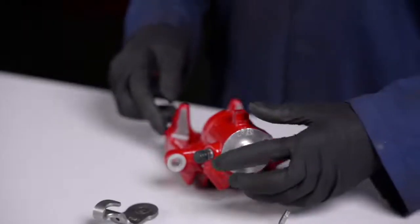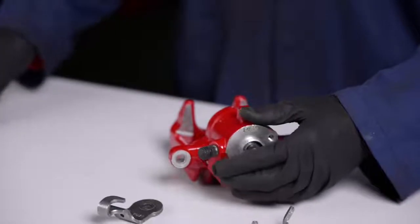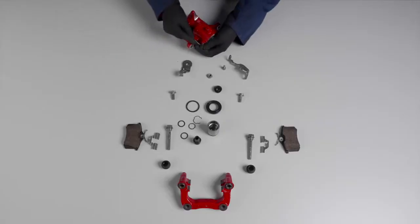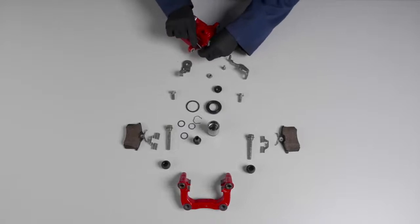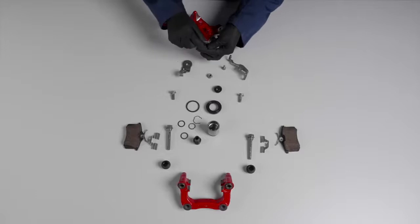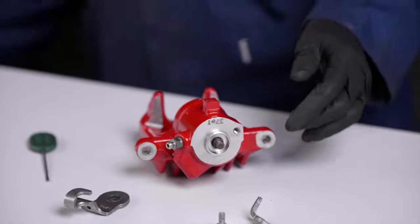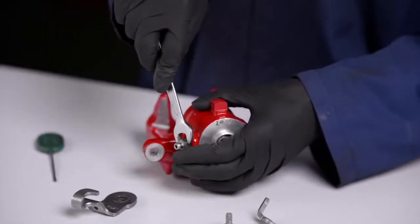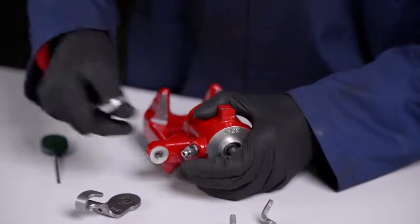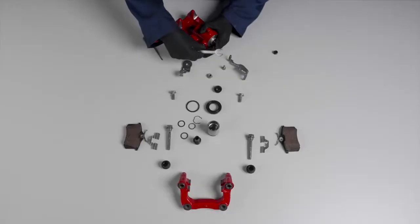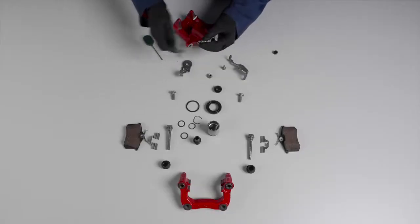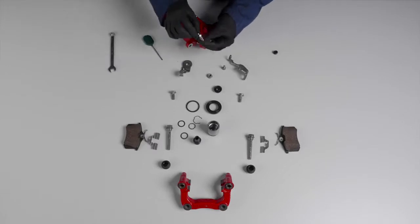This piece right here is called a purging or bleeder along with the cap. When the caliper is installed in the chassis and the hydraulic system is connected, it is necessary to remove any air that may have stayed inside the system. This process is called purging. That is when the purge came into play. Opening it up a little bit and stepping on the brake pedal, we manage to get the air out of the circuit.